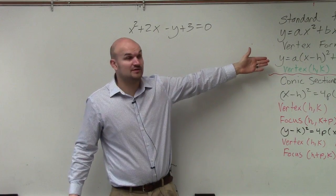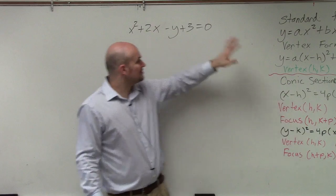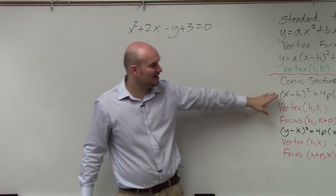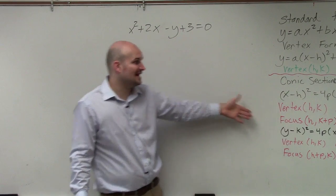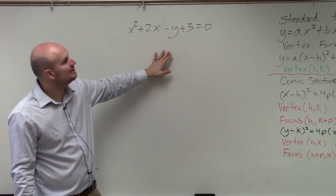Standard to vertex form. The process of doing standard to vertex form was completing the square. So I have it in this format. We want to write it in this conic section vertex form. So what I simply need to do is, again, complete the square.